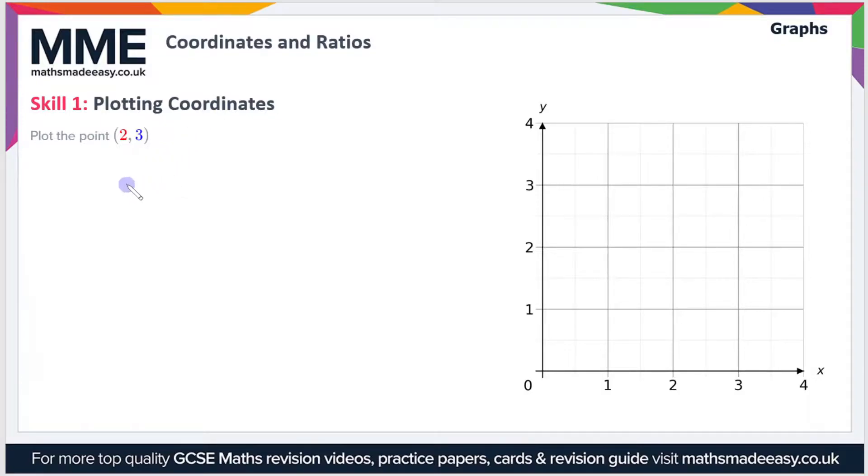This is pretty straightforward. We have to plot the point (2, 3). Now in every coordinate there's an x value and a y value, and they're always written x value first, y value second.